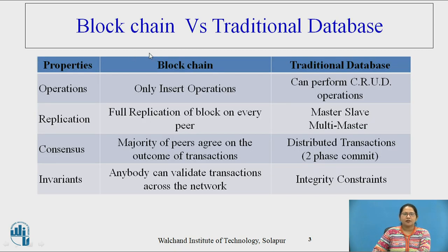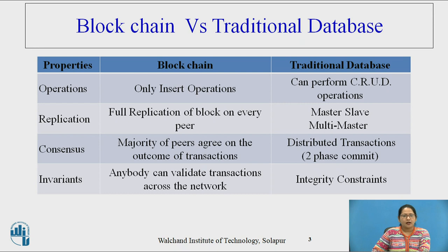What is the difference between blockchain and a traditional database? In blockchain, only insert operations are possible, while in a traditional database, we can perform CRUD operations. In blockchain, full replication of a block on every peer is possible, while in a traditional database, master-slave or multi-master replication is possible.